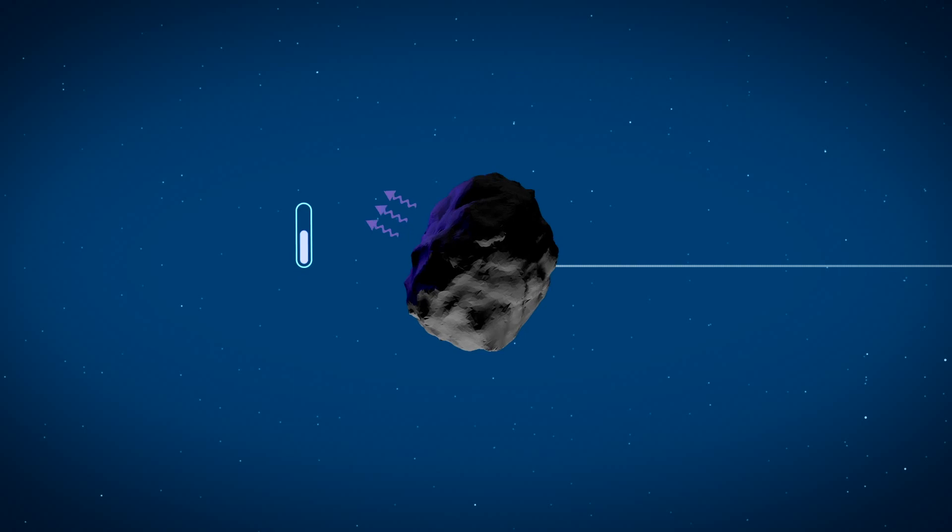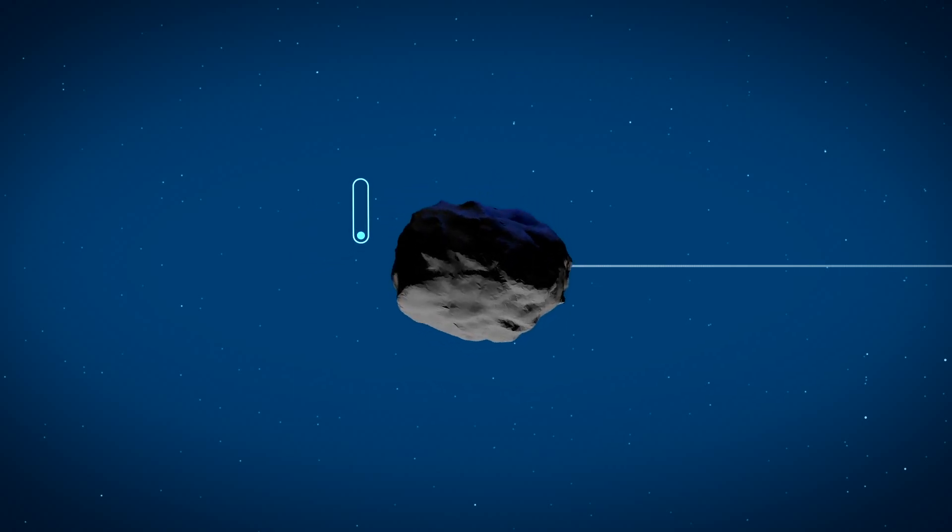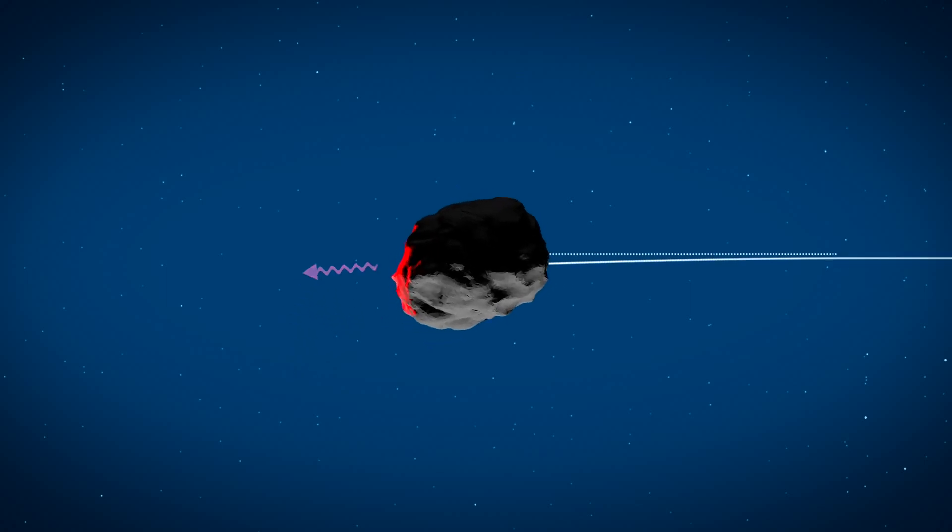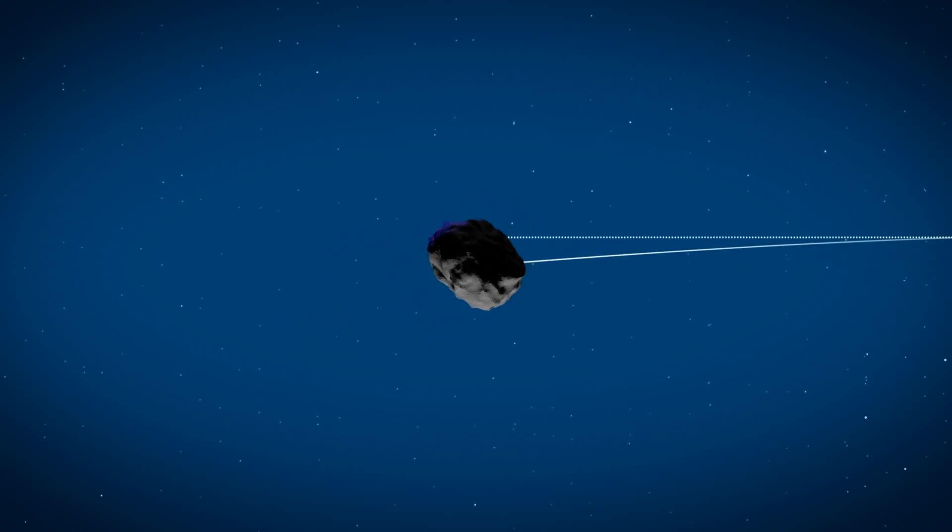During the night, however, the surface cools down, emitting the heat it absorbed as radiation. This radiation exerts a force on the asteroid, acting as a sort of mini-thruster that can slowly change the asteroid's direction over time.